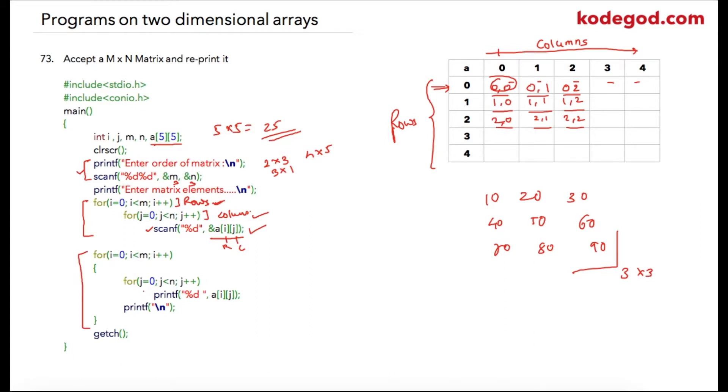And then in order to print the matrix, again we need a similar for loop. So here's the loop for rows, here's the loop for columns, and we're just simply going to print a of i j so that each element in this sequence one, two, three, four, five, six, seven, eight, nine will be printed.